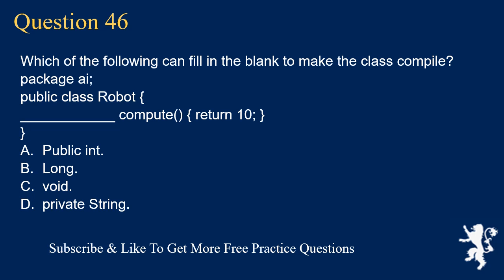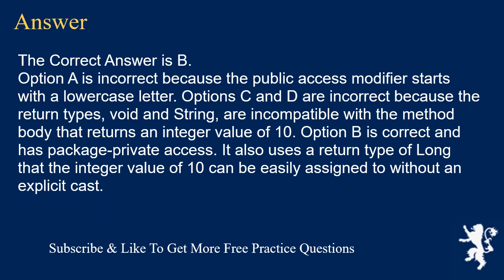Question 46. Which of the following can fill in the blank to make the class compile? package i; public class Robot { ___ compute() { return 10; } } A. public int. B. long. C. void. D. private String. The correct answer is B. Option A is incorrect because public starts with a lowercase letter. Options C and D are incorrect because void and String are incompatible with a method body that returns 10. Option B has package-private access and uses a return type of long that the integer value 10 can be easily assigned to without an explicit cast.